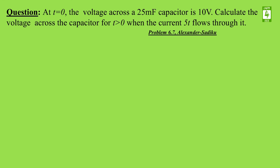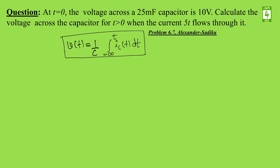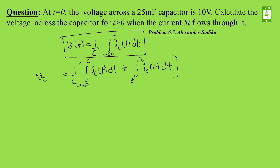The basic equation for the voltage across the capacitor is in the form: v(t) = (1/C) integral from minus infinity to t of i_c(t) dt. This is the fundamental equation for the voltage of the capacitor. The definite integral can be converted into two parts: (1/C) integral from minus infinity to 0, plus (1/C) integral from 0 to t of i_c(t) dt. The first part is called the initial value and the second part is called the final or steady state value.